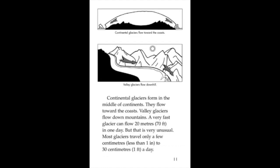Continental glaciers form in the middle of continents. They flow toward the coasts. Valley glaciers flow down mountains. A very fast glacier can flow 20 meters or 70 feet in one day. But that is very unusual. Most glaciers travel only a few centimeters, less than 1 inch, to 30 centimeters, which is about 1 foot a day.